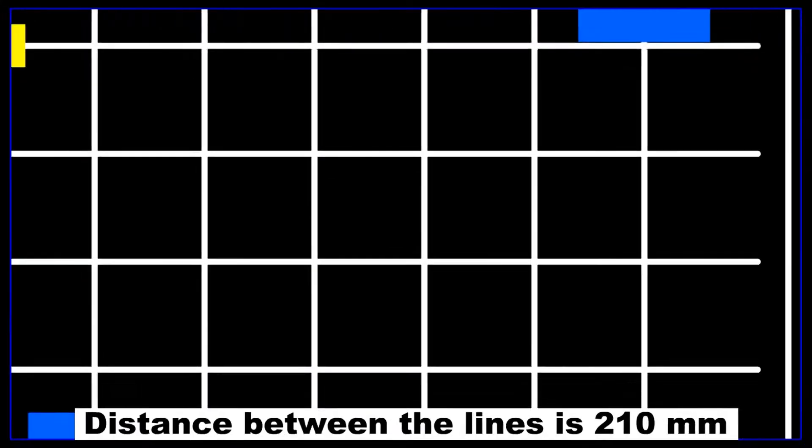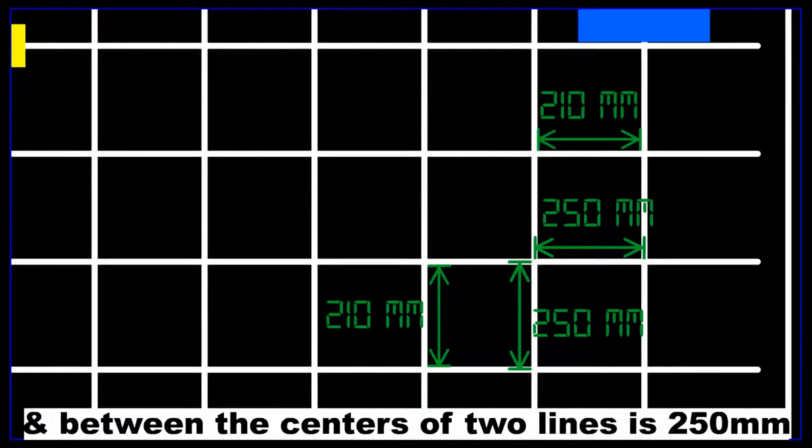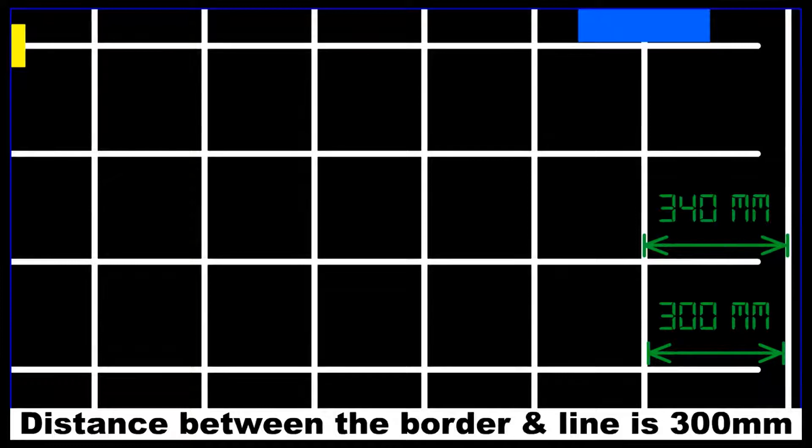The distance between two lines is 210 mm, and between the centers of two lines 250 mm. The distance between the border and line is 300 mm.